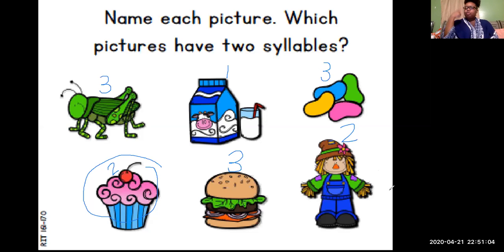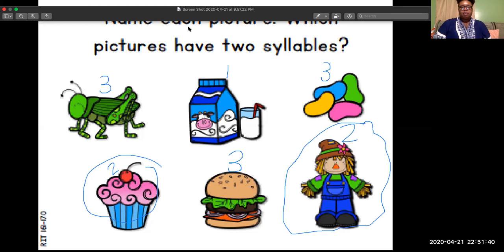Awesome job friends. Should we circle another one of these pictures up here? What other picture has two syllables? Scarecrow. So we're going to go ahead and circle the picture of this scarecrow. And we're going to give each other some virtual shine there, friends. Give each other virtual shine. Awesome job my friends. Now we are going to move on to our exit ticket.